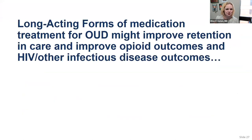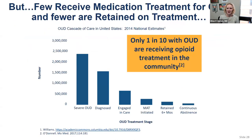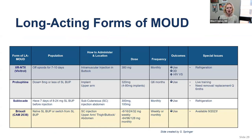Long-acting forms of medication for OUD may improve retention in care and opioid outcomes. Very few patients with opioid use disorder — as few as 1 in 10 — are actually receiving treatment in the community, based on the care continuum from 2014, and that likely has not improved after the pandemic. Long-acting options include: long-acting naltrexone (Vivitrol), Probuphine (implant), Sublocade, and CAM2038 (Brixia).